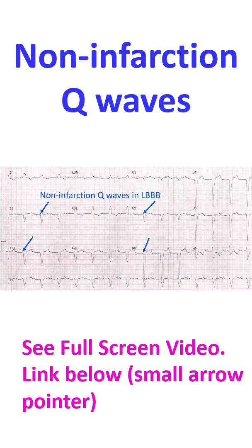Absence of initial left-to-right septal activation in left bundle branch block makes the first wave a Q wave or a QS complex in right-oriented leads. A QS complex means that there is only a single negative wave and no positive waves.